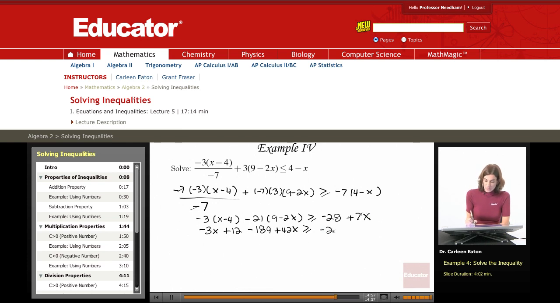I can't really do anything with that. Okay. Now, I'm going to combine like terms. And I do have some like terms. I have a negative 3x and 42x. Combining those, I'm going to get 39x. Negative 189 plus 12 is negative 177.